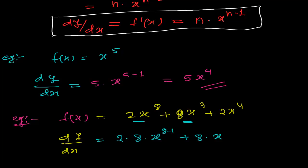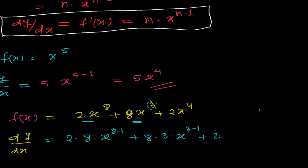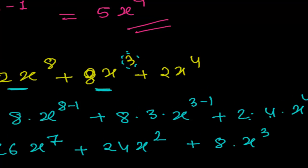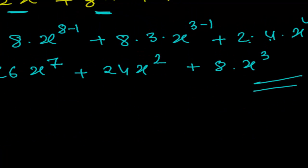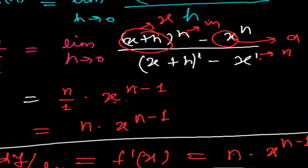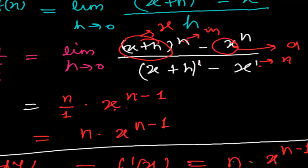Continuing with the third term, n equals 4, giving 2 times 4 times x to the power 4 minus 1. Combining everything: dy/dx equals 16x^7 plus 6x^2 plus 8x^3. Using this formula we can solve many problems, and it makes things quite easy for entrance exams and multiple choice questions. It is really one of the most important relationships in differentiation, so keep these things in mind.